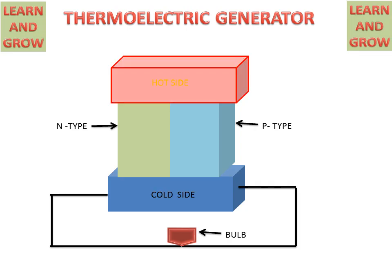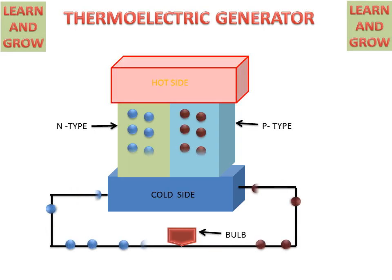What will happen? The hot side will give heating to the n- and p-type regions. From this, electrons and holes will get excited and they will travel towards the cold side. Because the cold side is connected to the wires and the bulb, electrons and holes will travel through the wire and reach the bulb, which will start glowing. A current will be generated in the wire. So, a thermoelectric generator is used for producing electricity with the help of a hot and cold metal, or hot and cold side.